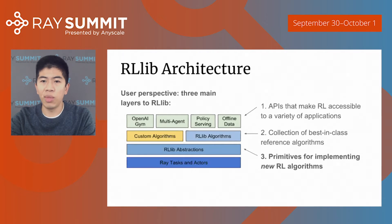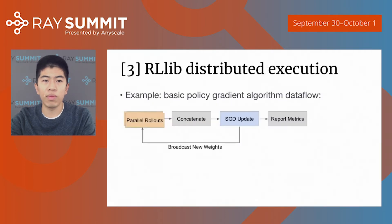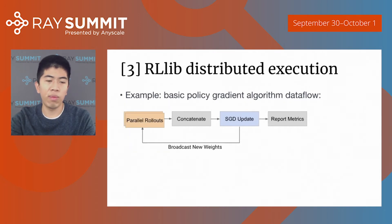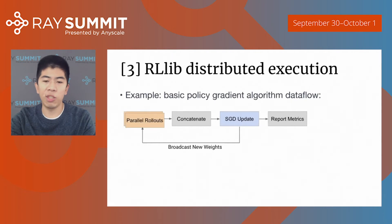If you're an algorithms researcher or need to deeply customize an algorithm, RLib provides primitives for building completely novel RL algorithms that seamlessly fit in with RLib's unified API. Here I'll dive into how RLib scales algorithms to a cluster, using scaling the basic policy gradients algorithm as an example. The computation pattern is simple: first, parallel rollouts — with the current policy, we generate rollouts from the environment in parallel to gather experiences. Next, we combine these experiences into a single dataset with a concatenate operator. We then use this concatenated data to update our policy with stochastic gradient descent. Finally, we broadcast the new policy to our workers, report metrics, and repeat.